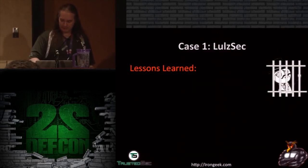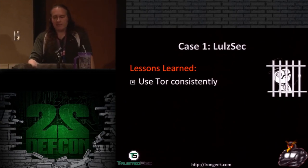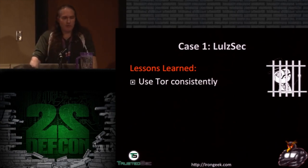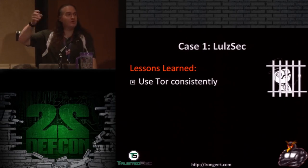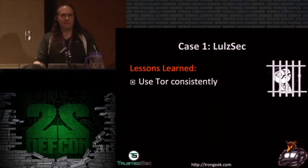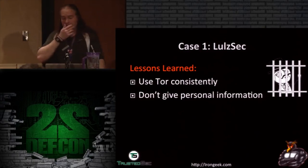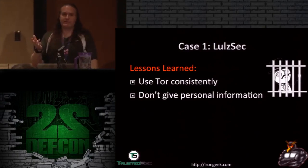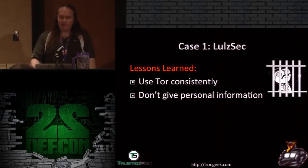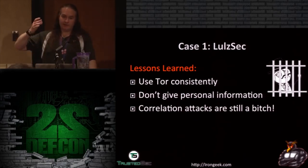Lessons learned: Use Tor consistently — if someone uses it only part of the time, that's going to cause a problem. Back in the day, one tactic was to give someone a tracking cookie while they're on Tor, wait for them to disconnect, and if they come back without Tor, you see that cookie and know who they are. If you're using Tor Browser Bundle that doesn't work because it clears history on shutdown. Don't give out a lot of personal information — if Hammond hadn't released details about where he was arrested and who he was hanging out with, they probably couldn't have narrowed it down. Correlation attacks are still a problem.